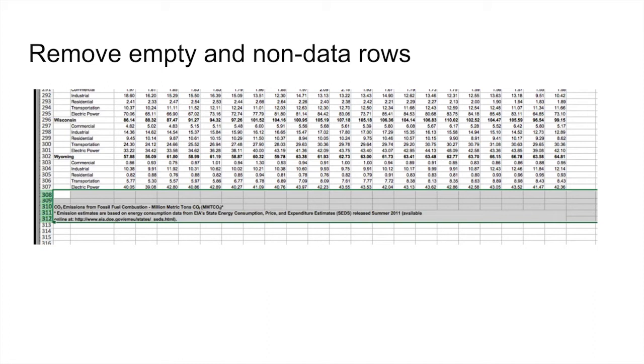This example shows data from a carbon dioxide emissions data set. The carbon dioxide emissions are organized by state, economic sector, and year. Here we see that the original data file includes notes that appear below the data table. To format this data for visualization, remove any notes under the data table. If they're still needed, they should be saved elsewhere in supporting documentation.